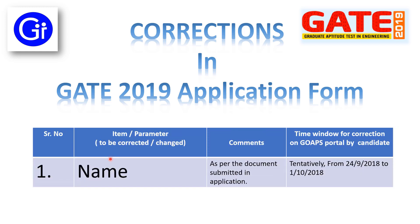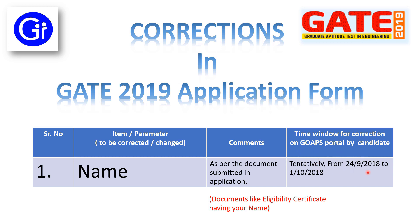The first parameter to be corrected or changed is name. This can be done as per the document submitted in the application form — documents like your eligibility certificate bearing your name on it. So as per the certificate or document, you can make a correction in your name. The time window for correction on the GOPS portal by the candidate is tentatively from 24th September to 1st October.